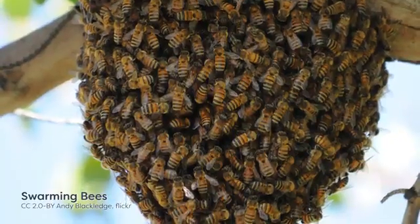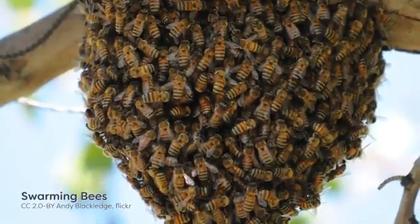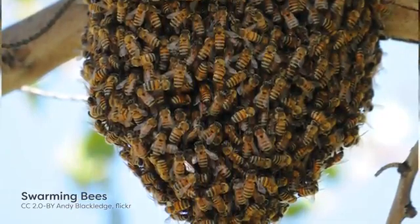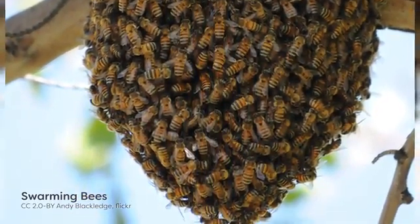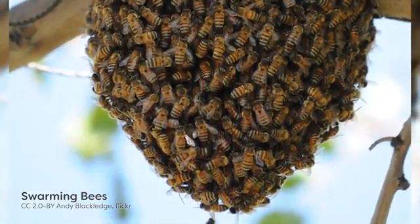A queen bee will initiate swarming behaviour when a bee colony becomes too large for the hive, and there may be no room for new eggs. This is a complex process that involves the production of new queens in the old hive, and the separation of workers into groups to either accompany the old queen out of the hive, or to stay in the old hive and support the new queen.